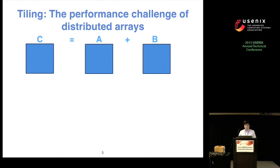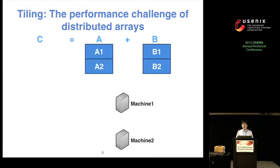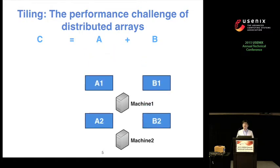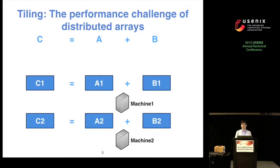So what is tiling? Tiling is a way to partition a distributed array. Let's look at a very simple expression: C equals A plus B with two-dimensional arrays. Since these arrays are large, we need to distribute them to multiple machines. Suppose there are two workers in our example. Each array is divided into two tiles and distributed to both machines, so each machine can do the computation without any network communication. However, if one of these arrays is divided in a different way, what happens?